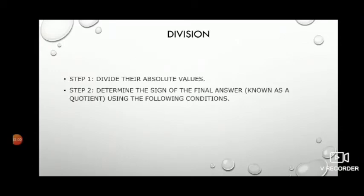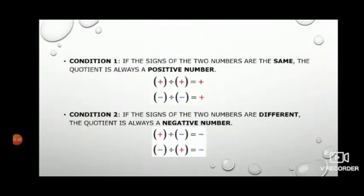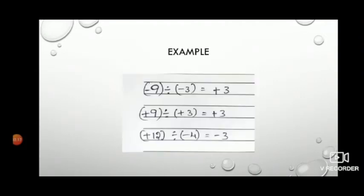Next is division. Division works like multiplication. First divide the absolute values, then determine the sign of the result. Same conditions apply: if both numbers have the same sign, the result is positive; if both numbers have a different sign, the result is negative.